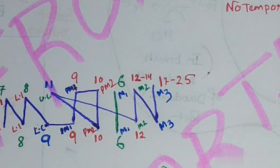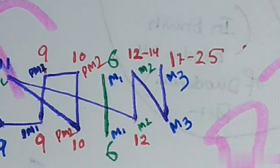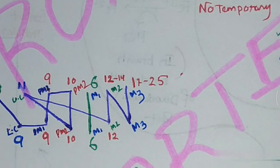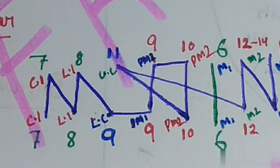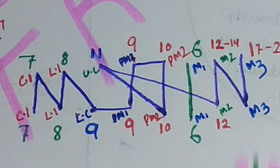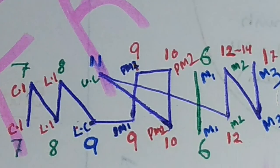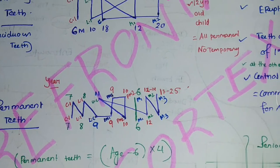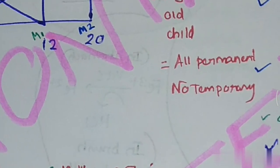Second molar develops between 12 to 14 years of age, and the third molar develops between 17 to 25 years. So the full permanent sequence is: first molar, then incisors, lower canine, premolar one, premolar two, upper canine, second molar, and lastly third molar. At 12 years old, all permanent teeth are present and no temporary teeth remain.